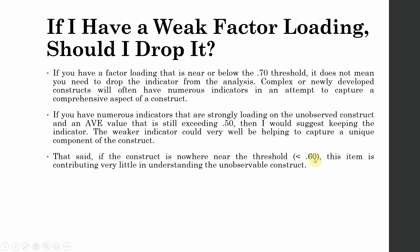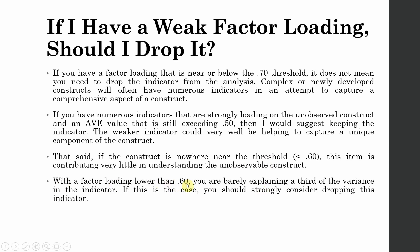That said, if the construct loading is nowhere near the threshold of 0.60 — if it's obviously less than 0.60 — this item is contributing very little in understanding the unobservable construct; it's not representing the underlying construct very well. With a factor loading lower than 0.60, you are barely explaining a third of the variance in the indicator. If this is the case, you should strongly consider dropping this indicator, as this item is not explaining enough variance and should be deleted.